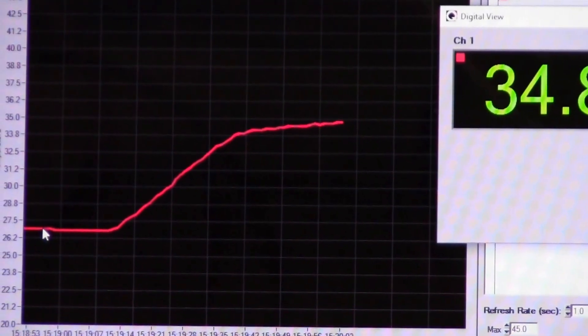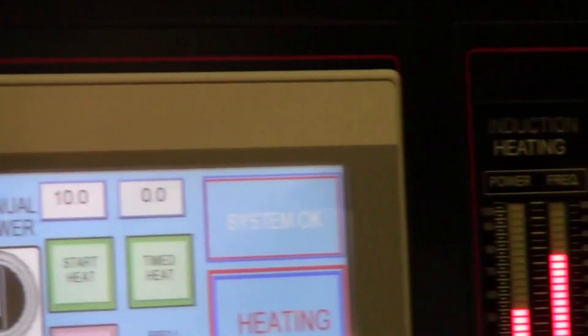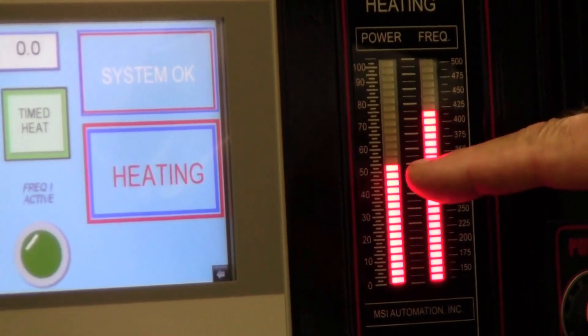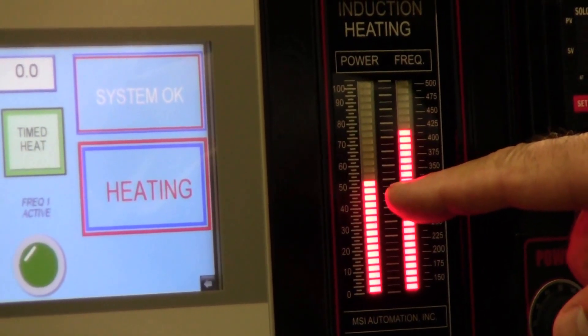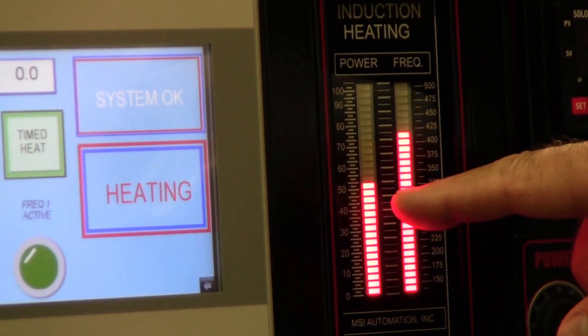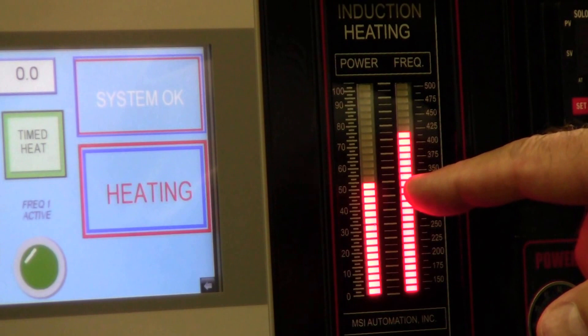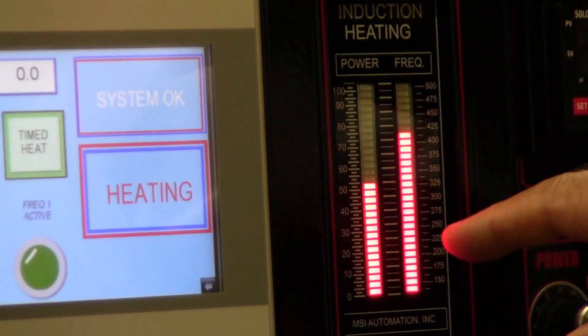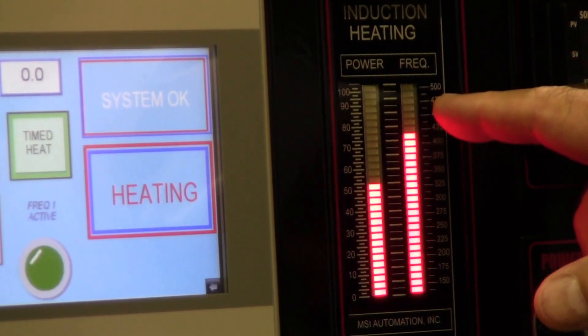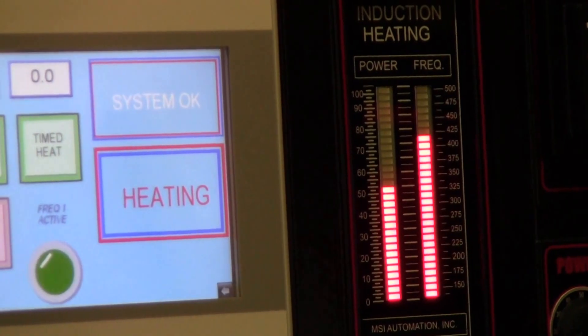And if you scan back at the control system, you can see that the power has been automatically reduced to maintain that temperature. Otherwise, were it not to be controlling the temperature, the power would still be at maximum, and we'd be close to 40 degrees centigrade.